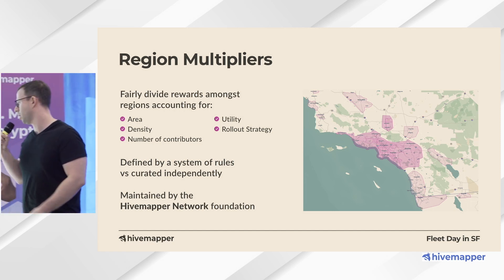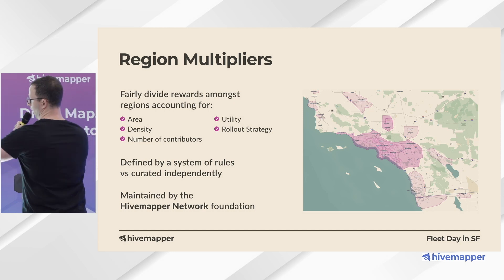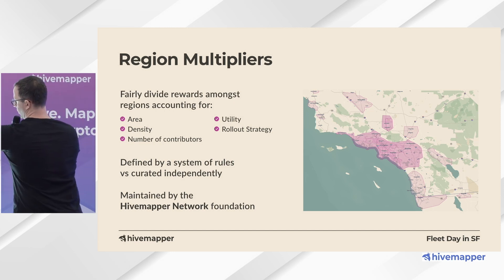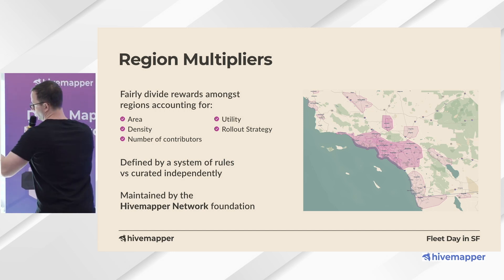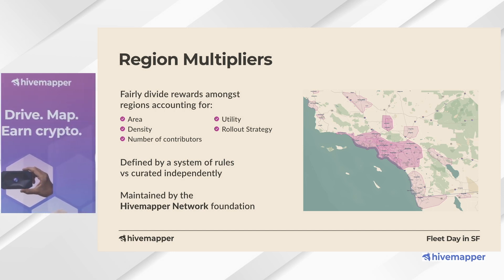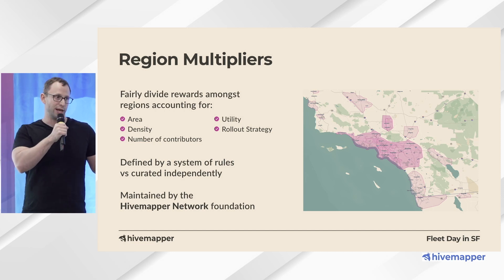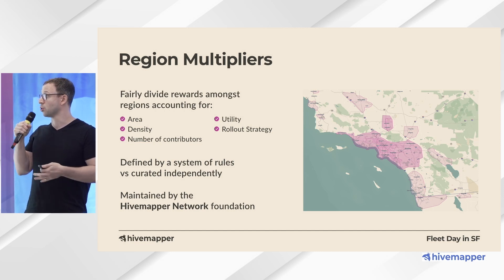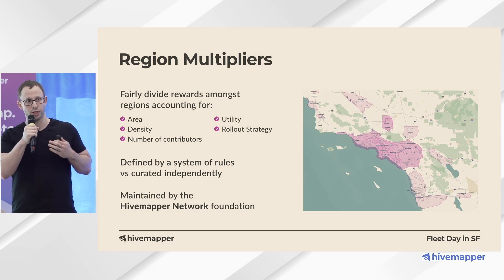You can see here we have a Los Angeles metropolitan MSA region, as well as a bunch of other regions. The whole world really is a region, and we're stamping out specific sub-regions. But how do you fairly divide rewards amongst all the regions? You have to account for things like the size of the region, the road density, the number of people, the commercial value, and how we're rolling this out. We define that by a system of rules instead of curating it individually, so we can ensure it's fair and open.